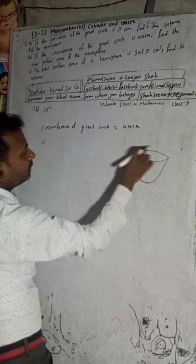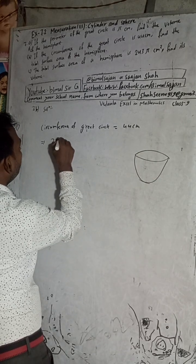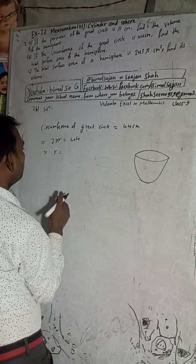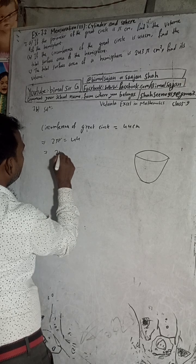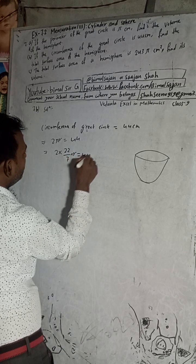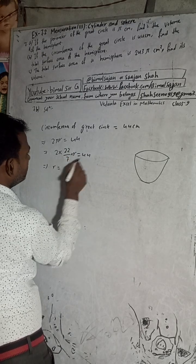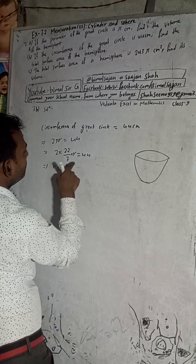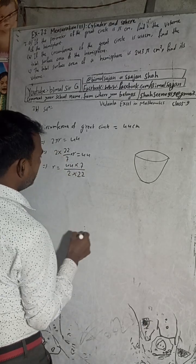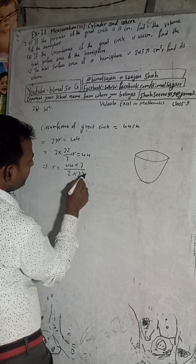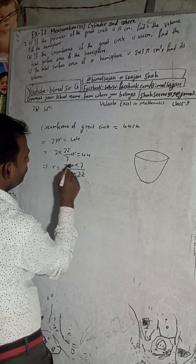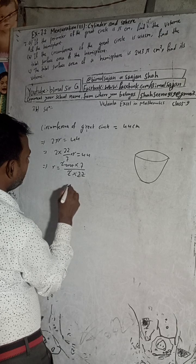The formula for circumference is 2πr, so 2πr = 44 cm. Substituting π = 22/7: 2 × (22/7) × r = 44. Taking 7 to the right side it multiplies, giving r = (44 × 7) / (2 × 22). Canceling 22 and 2, we get radius r = 7 cm.